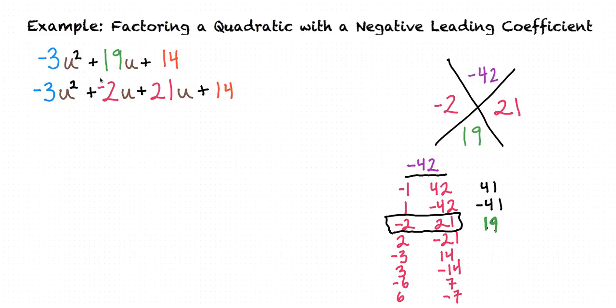The reason we can do this is because -2u + 21u equals 19u. So we haven't changed the value of our equation. We've just rewritten it differently. At this point, we find the greatest common factor of our first two terms and factor that out, and then we do the same for our last two terms.